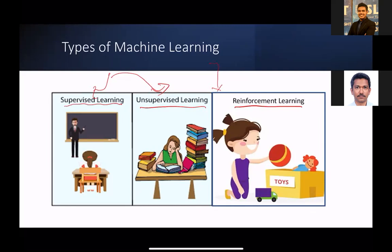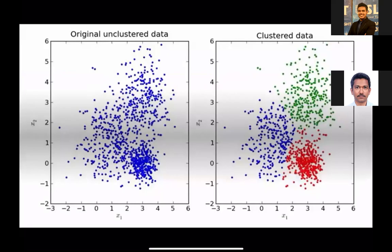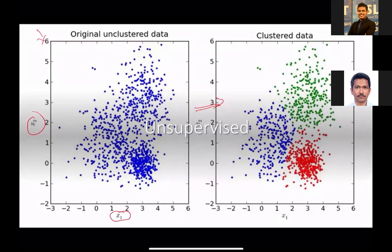In unsupervised learning, you are given input data only — there is no target output given to you. Looking at 2D data with features X1 and X2, someone comes up with an output saying there are three groups in this data, coloring them red, green, and blue. That is the fundamental idea of unsupervised — you figure out what the target should be, coming up with a function that says there are three groups and who belongs to which group.